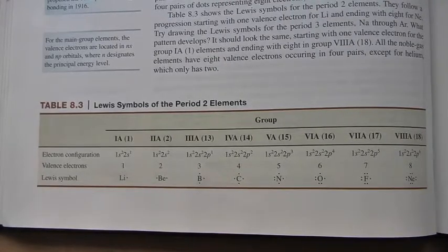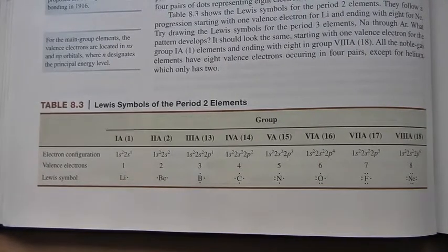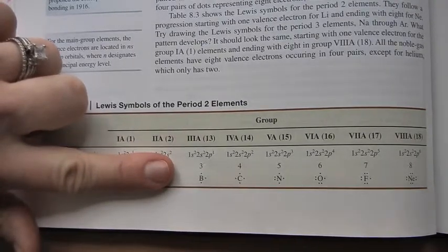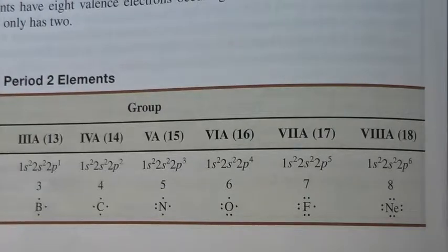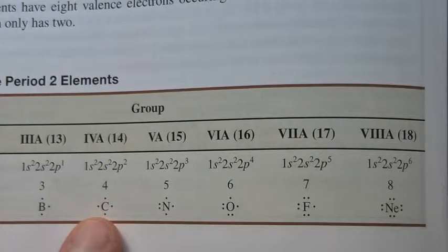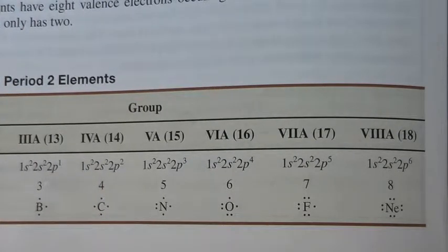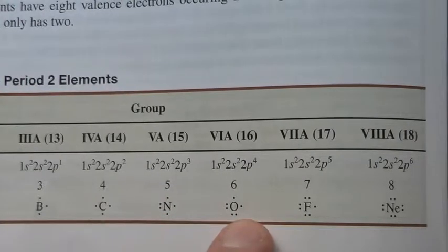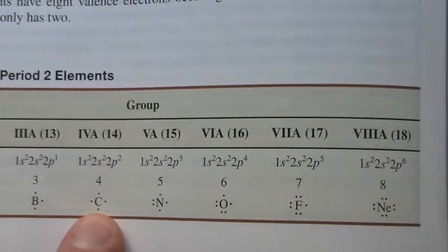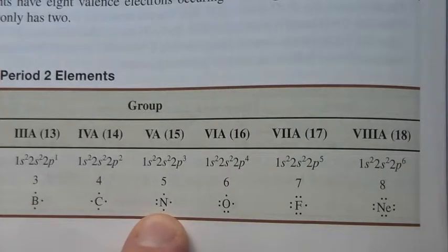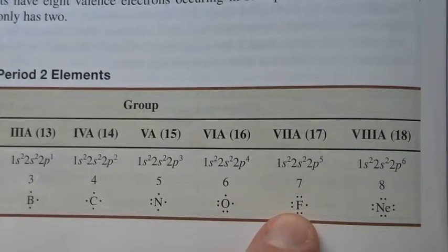Since covalent bonding occurs in molecular compounds, we will be focusing on the non-metals. The tendency of an atom to achieve an electron configuration with eight valence electrons — similar to a noble gas — is called the octet rule. Carbon needs to gain four electrons to have eight valence electrons. Nitrogen needs three, oxygen needs two, fluorine needs one, and neon already is a noble gas. So carbon is likely to form four bonds, nitrogen three, oxygen two, and fluorine one bond.